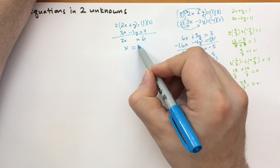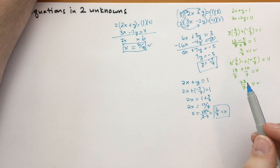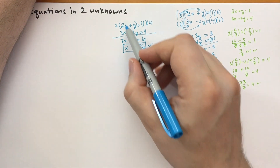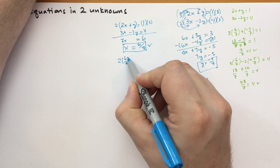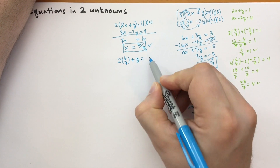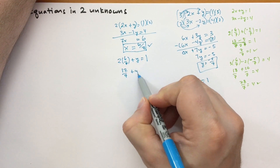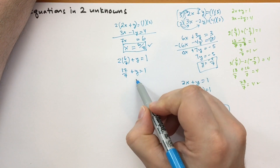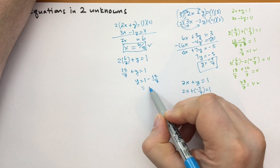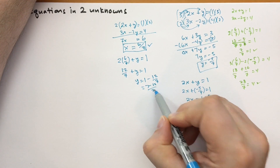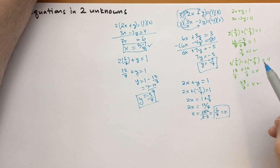So x equals 6 sevenths — we've already got one value right away. Now let's plug this in to the simpler first equation: 2 times 6 sevenths plus y equals 1, so 12 sevenths plus y equals 1, giving y equals 1 minus 12 sevenths, which is 7 sevenths minus 12 sevenths, which is minus 5 sevenths. That's the same answer we got before.